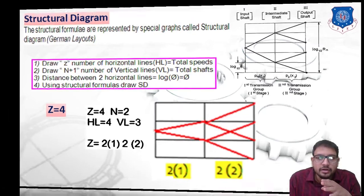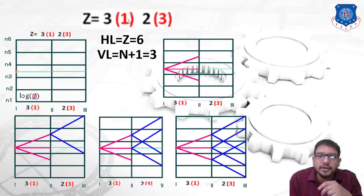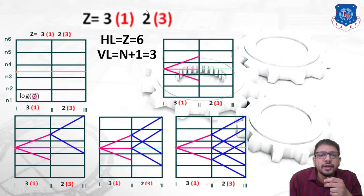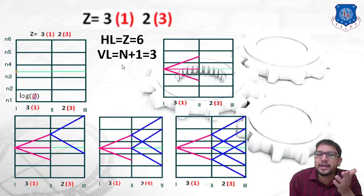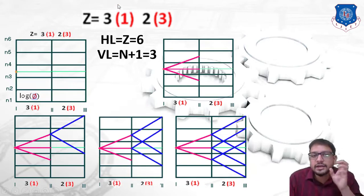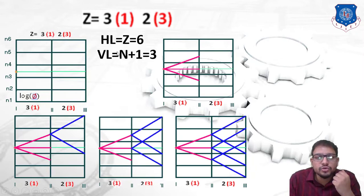Now let's consider a six-speed gearbox. The equation becomes Z equals 3 into 2, giving the structural formula 3 raised to 1 into 2 raised to 3. X1 equals 1 and X2 equals P1 which is 3. The number of horizontal lines equals 6 (the speed steps). The number of vertical lines is n plus 1 equals 3, since it is a 2-stage gearbox with N = n1 plus n2 = 2.